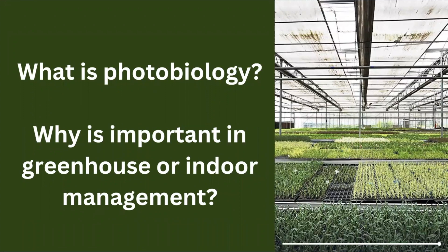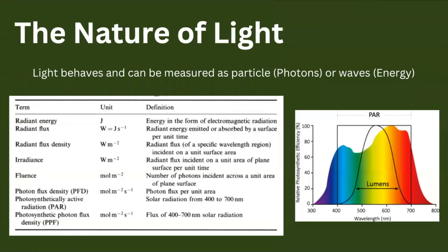Light is very important in growing systems. We have already learned a lot in our other videos about the importance of light and how important it is to measure light in growing systems. However, it's even more important to know how light can affect different plant processes. Light can behave as a particle and also as a wave, so it's possible to measure light in different ways — some measurements are based on radiation or energy, and others are based on photons or particles.